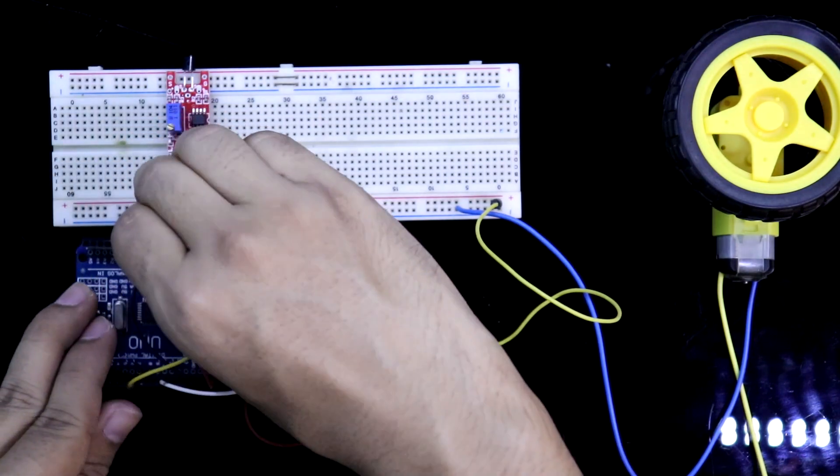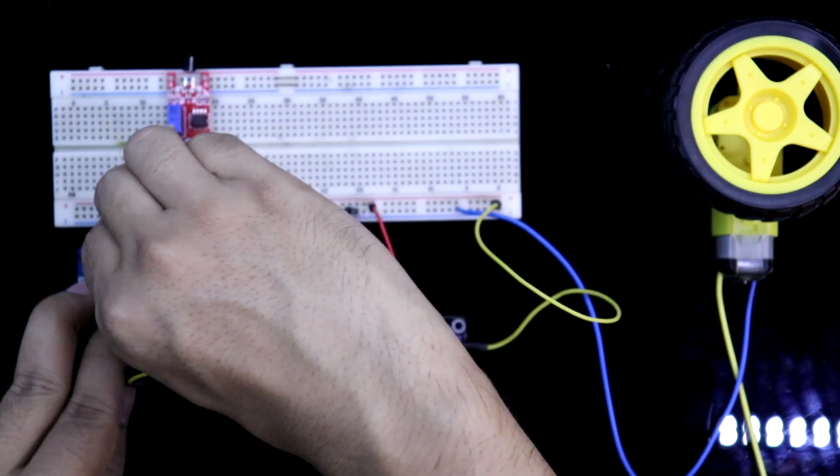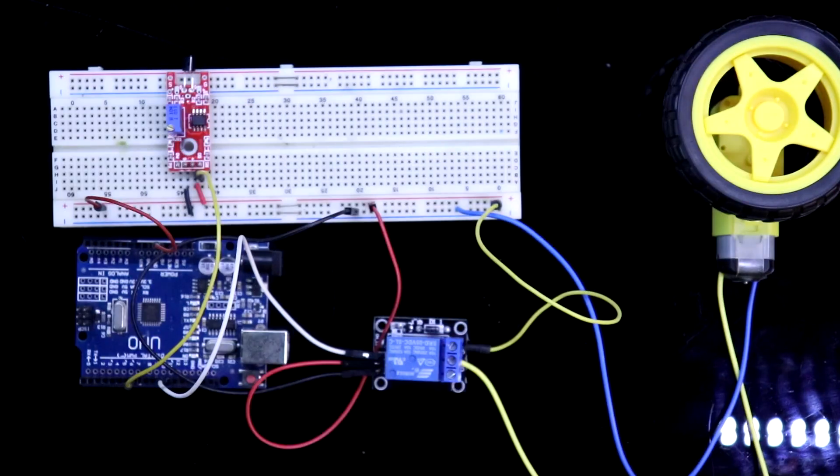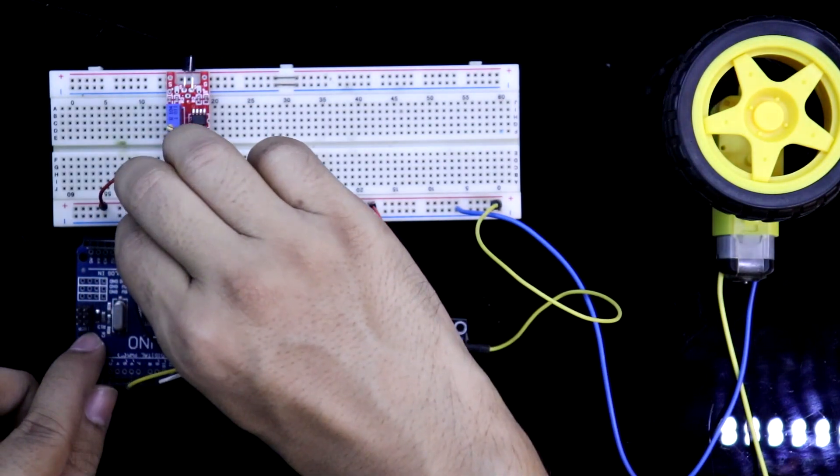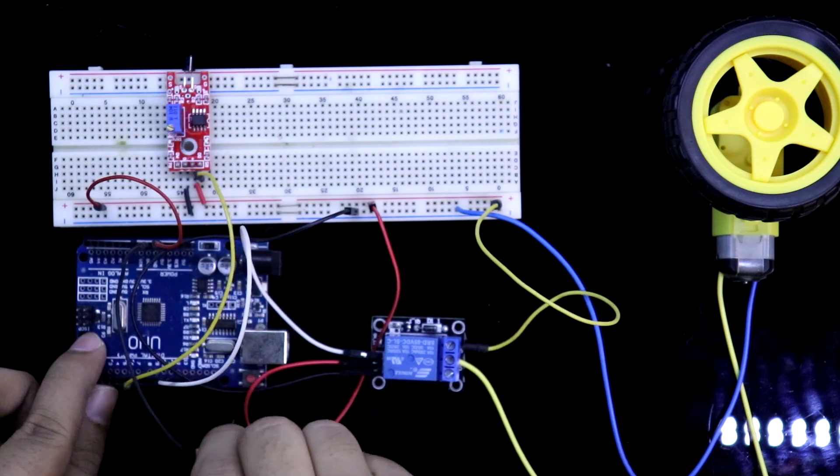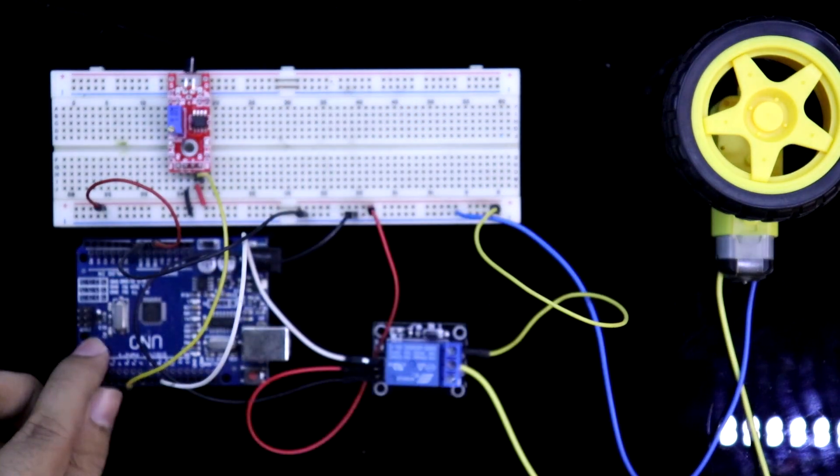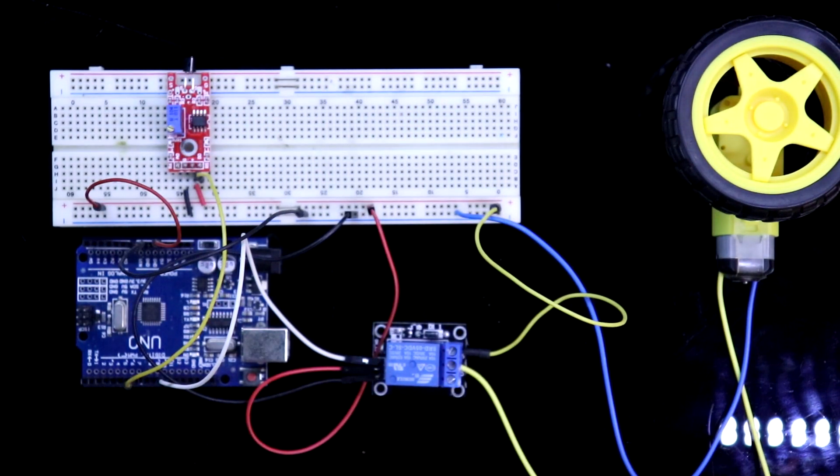Arduino 5 volt to the positive rail and Arduino ground to the negative rail. So our connection is completed.